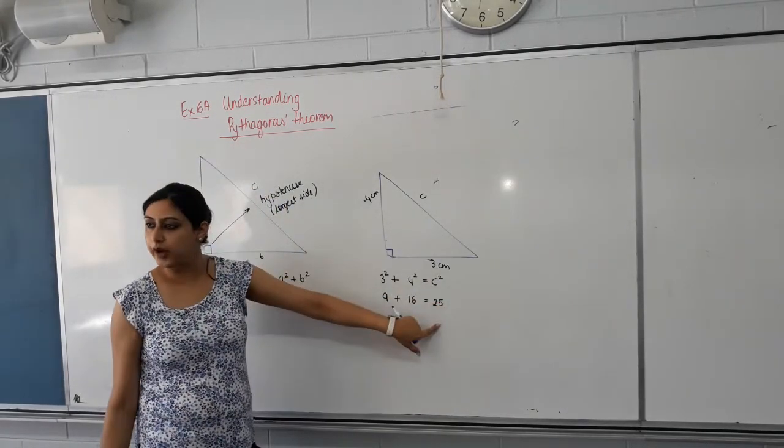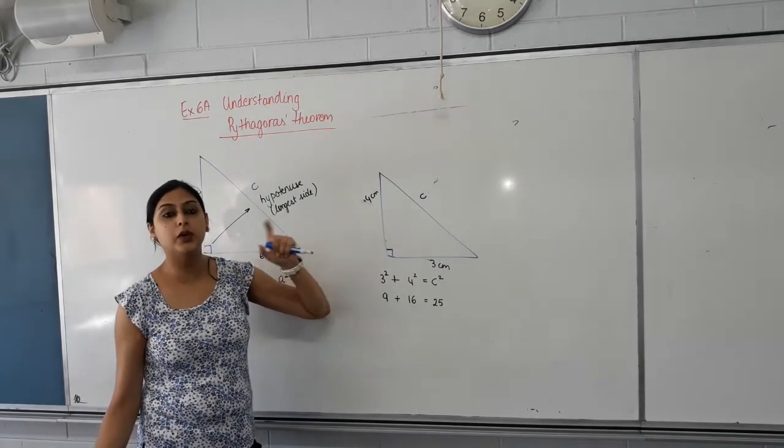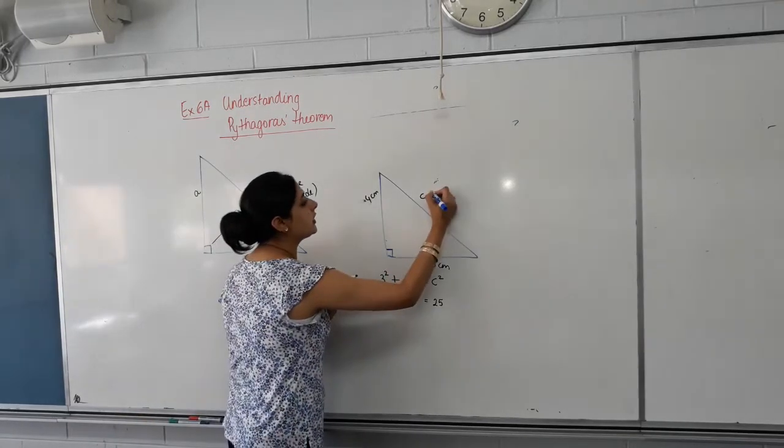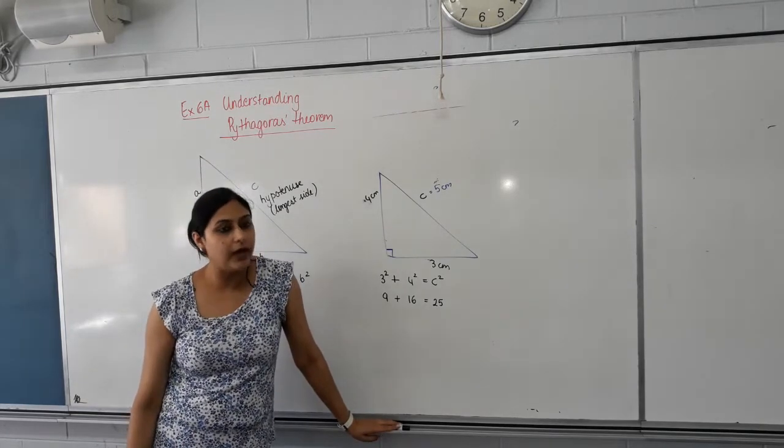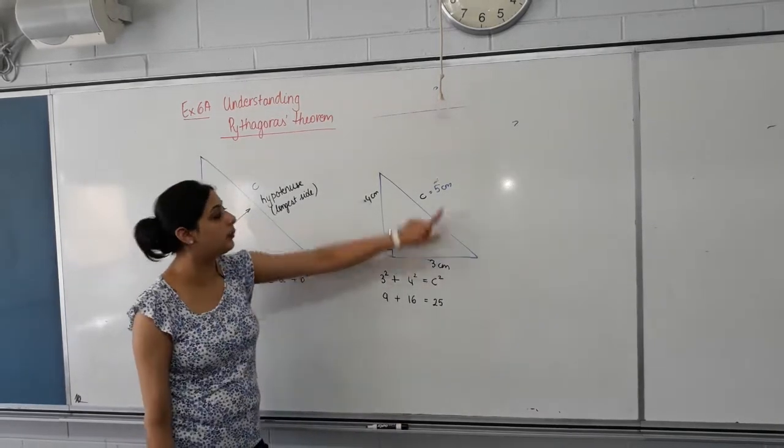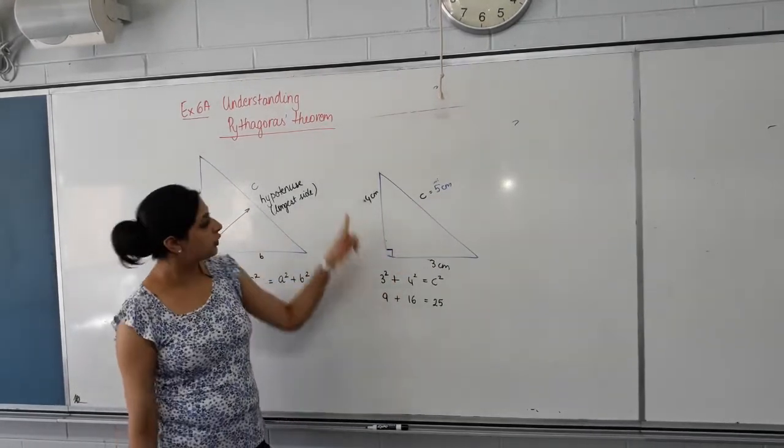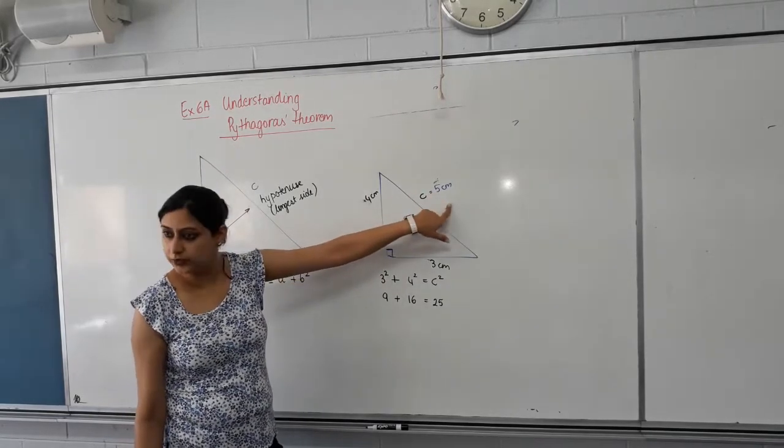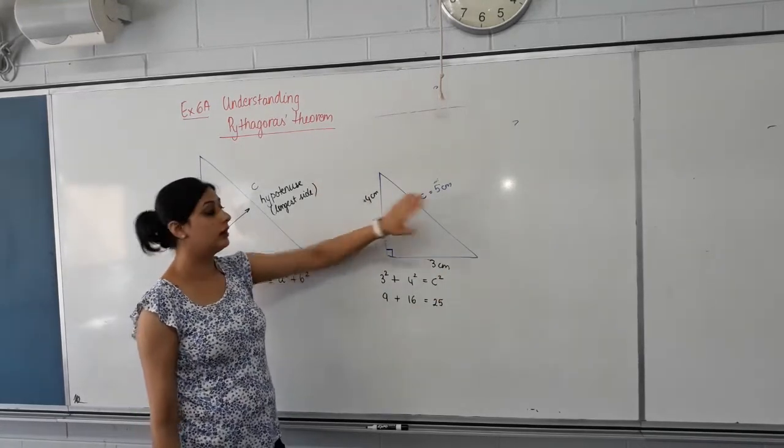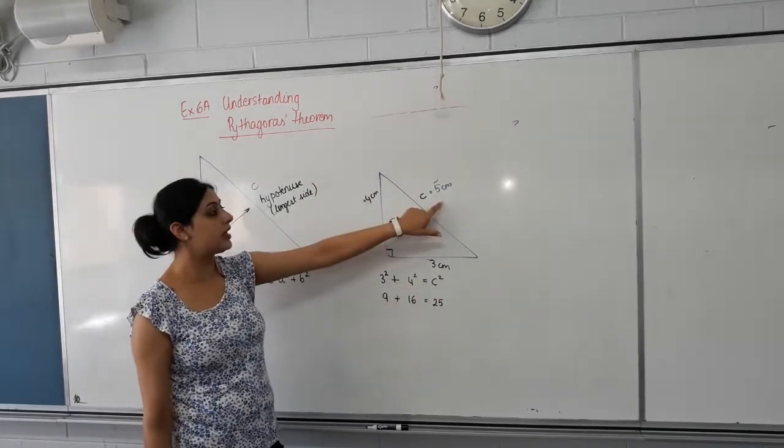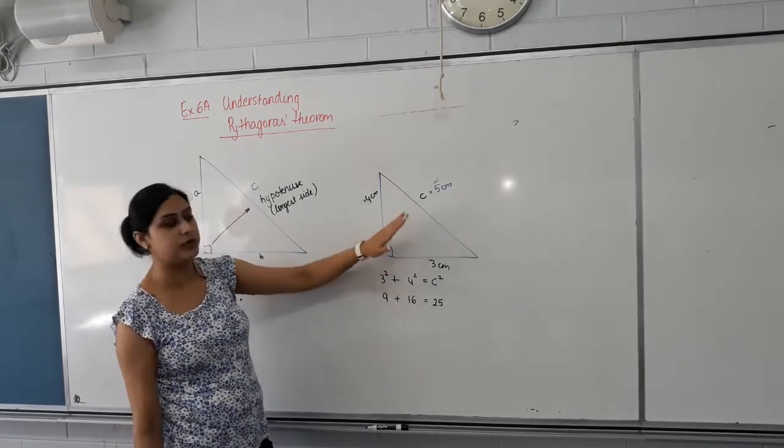25. So if C squared is 25, what would C be equal to? What number squared is 25? 5. 5. So can I say C is 5 then? Yes. Yes. And you can check it. And that works in any right-angled triangle. The hypotenuse squared is equal to this side squared plus that side squared. So 3 squared plus 4 squared will always be equal to 5 squared. So if we have a right-angled triangle with a side length 3, a side length 4, then hypotenuse must be 5. And can we see that it's actually the longest as we talked about? So that's the mathematical way of representing Pythagoras.